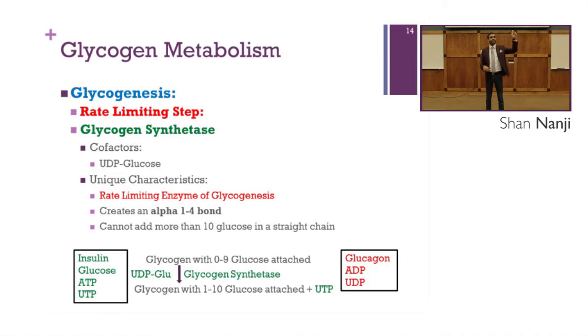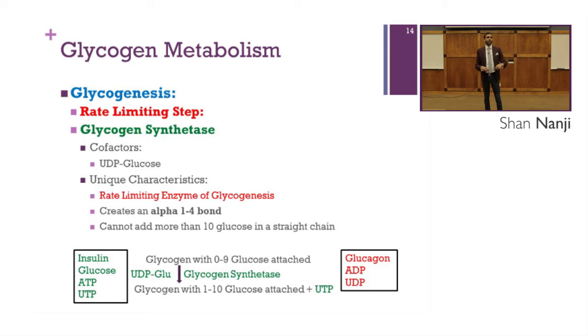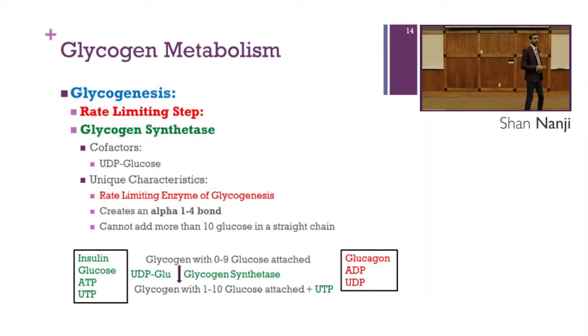When talking about rate-limiting enzymes, you need to know what activates them versus what inhibits them. The four activators of glycogen synthetase are: insulin, glucose, ATP, and UTP. There are three inhibitors: glucagon, ADP, and UTP.